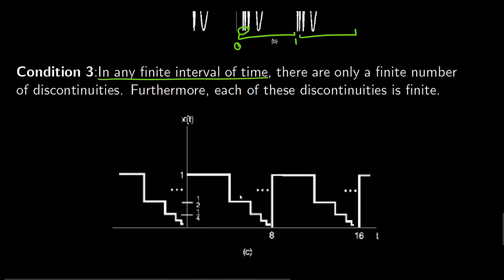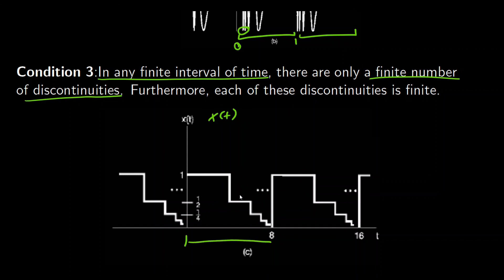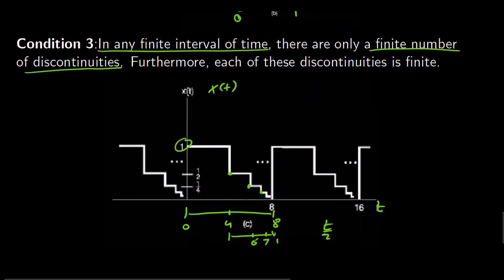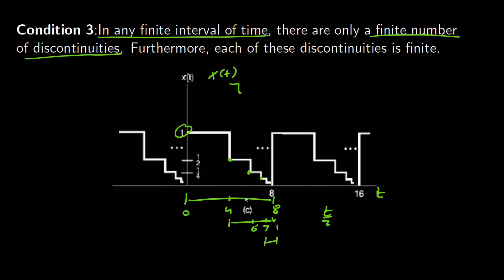The third condition states that in any finite interval of time there are only a finite number of discontinuities; you cannot have infinitely many discontinuities. For example, consider a signal where between 0 and 8, each time we halve the interval the amplitude is also halved — at time 4 the amplitude is 1/2, at time 6 it is 1/4, at time 7 it has another jump, and so on — producing infinitely many discontinuities. Though the signal is periodic, it cannot be represented by means of a Fourier series.